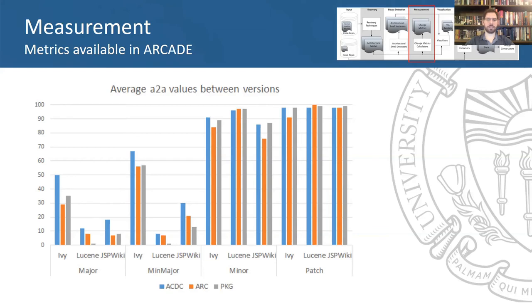between minor and patch versions, all three systems maintain mostly the same architecture. However, between major and min-major versions, Lucene and JSP wiki are practically new systems entirely, whereas Ivy, at least for min-major versions, remains more or less stable.